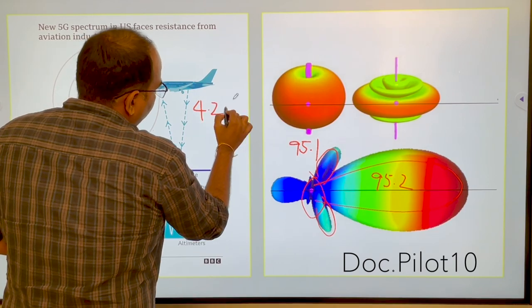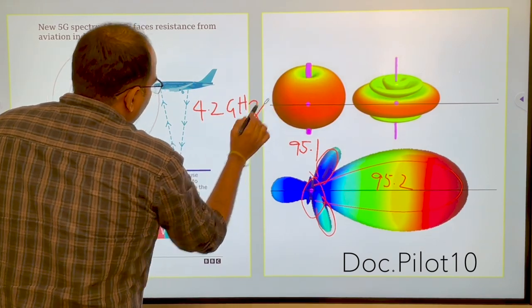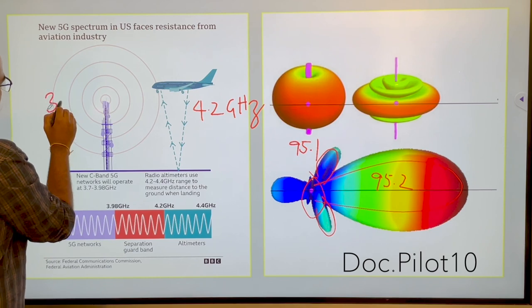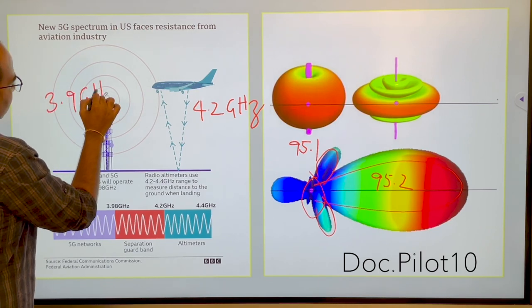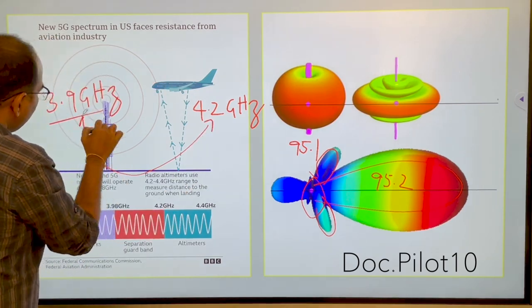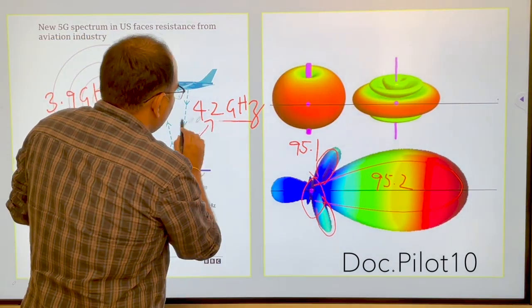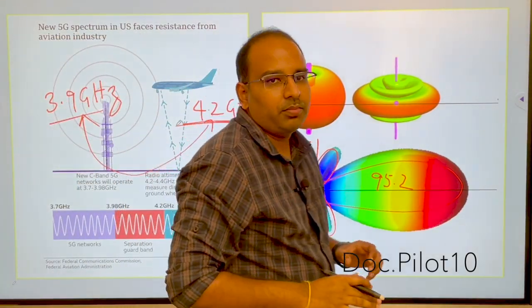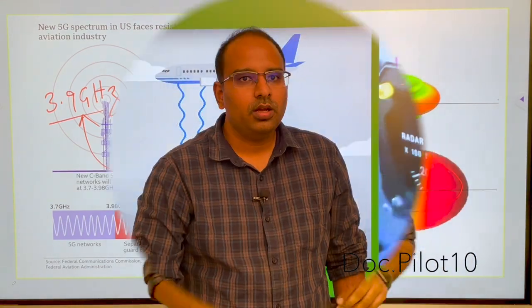Now what's happening is, the radio altimeter works on a frequency of 4.2 gigahertz. 5G networks work on a frequency of 3.9 gigahertz. So this is the reason, due to the frequencies being so close, there arises a problem.